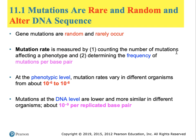By counting the number of mutations affecting a phenotype, that gives you an estimate of the mutation rate. Determining the frequency at which mutations are affecting each base pair is another metric. At the phenotypic level, mutation rates vary between different organisms, but the average seems to be somewhere between one in a million to one in a hundred million bases. At the DNA level, the mutation rate is much lower at one in a billion per replicated base pair.